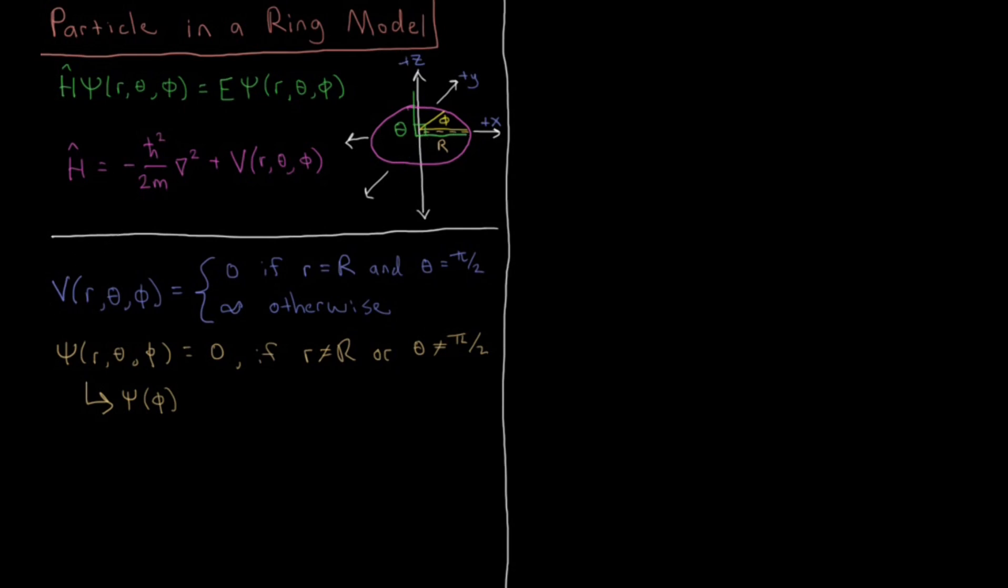So that's our potential, and then for this ψ of phi, that's going to be the ψ of big R, pi over 2, phi. Okay, so then that's our potential.